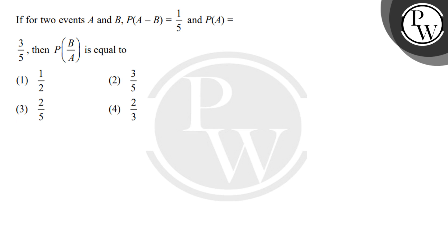Hello students, so let's read this question. The question is, if for two events A and B, probability of A minus B equal to 1 upon 5 and probability of A equal to 3 by 5, then probability B oblique A is equal to which of the following options?